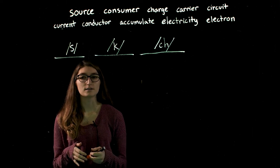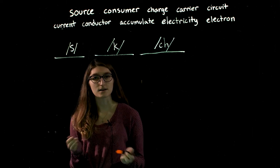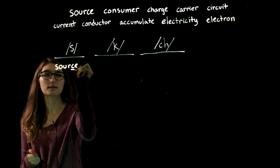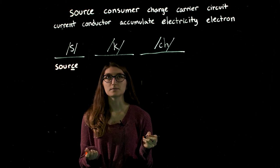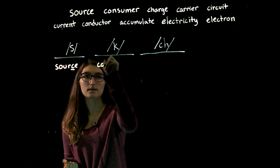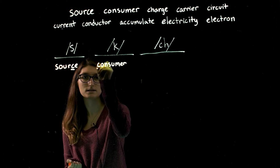So in source, you can hear that the C makes the S sound, so we're going to put this in our first column. And this C makes the S. In consumer, you can hear the hard K sound, so this will go in our second column. And it makes the K.